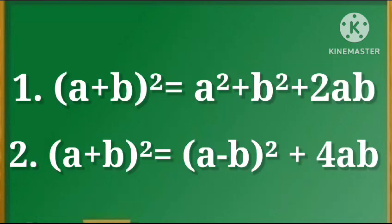1. (a + b) whole square is equal to a square plus b square plus 2ab. 2. (a + b) whole square is equal to (a minus b) whole square plus 4ab.